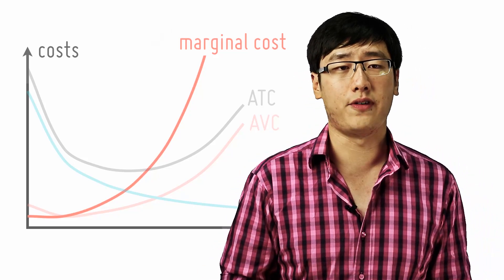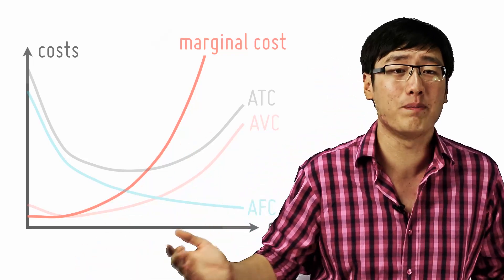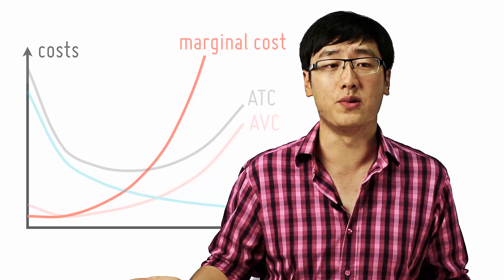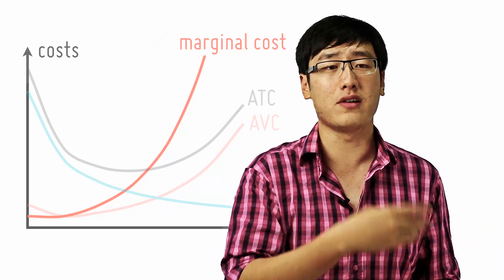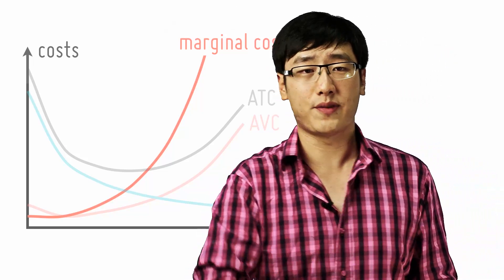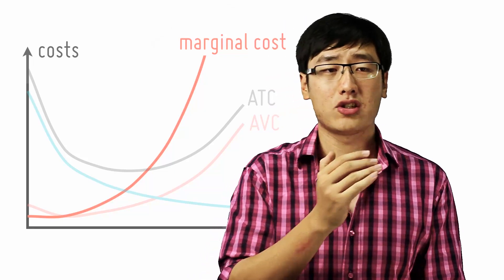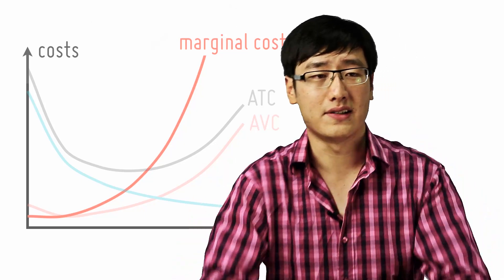The shape of the marginal costs follows directly from the law of diminishing returns. Again, that's why I say it's so important. So as more variable factor, for example, labor is used, the extra units of output cost less than the previous units. Remember this from the AC. Beyond a certain level, diminishing returns sets in. Each additional unit of labor brings in less additional products. So the marginal cost increases.